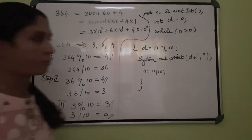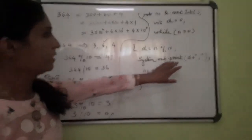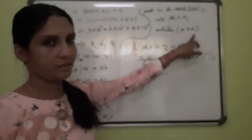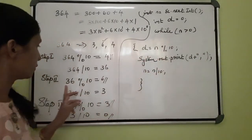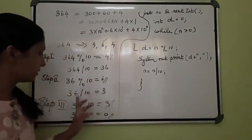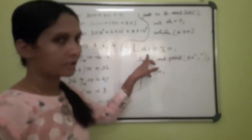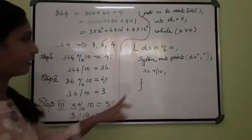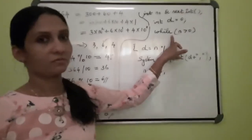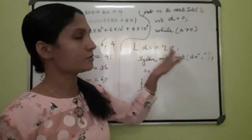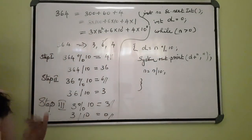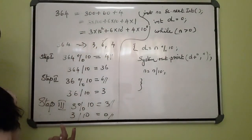It will repeat until n becomes 0. First iteration: d = 364 % 10 = 4, print 4, then n = 364 / 10 = 36. Check condition: 36 > 0, true, continue. d = 36 % 10 = 6, print 6, then n = 36 / 10 = 3. Check: 3 > 0, true. d = 3 % 10 = 3, print 3, then n = 3 / 10 = 0. Now 0 is not greater than 0, condition is false, the program stops. If you try to understand this, you can easily do all the number programs. It's very simple.